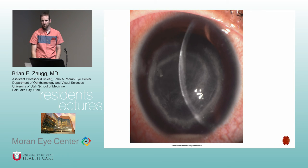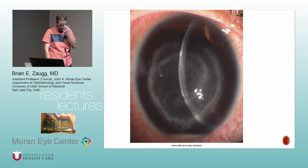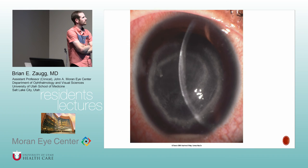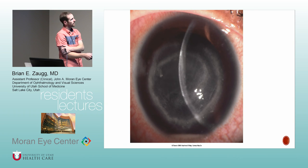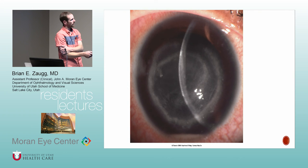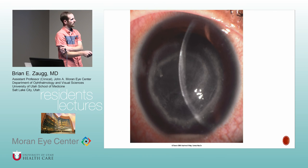This image shows a ring infiltrate with surrounding edema in a contact lens wearer — classically acanthamoeba. The cornea is thicker in the involved area due to edema, with possible thinning inferiorly.